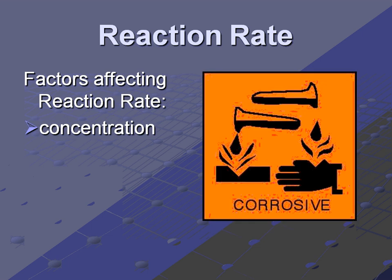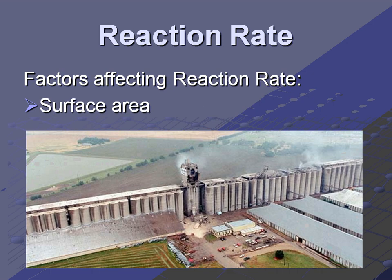Concentration also affects reaction rate. A concentrated acid is going to react much more quickly than a diluted or weak acid. Think about which you would rather have spilled on you — a concentrated acid or a diluted weak acid. You'd want the diluted one, because that's going to react slower and you'll have more time to remove it.